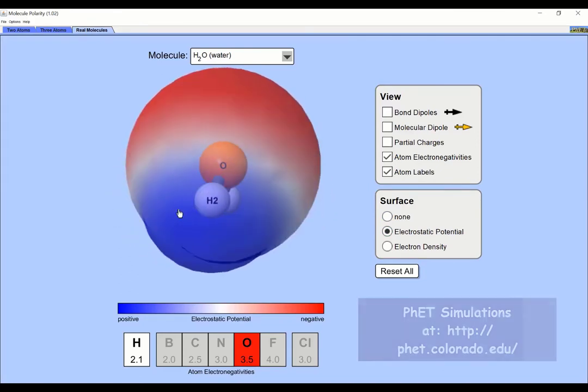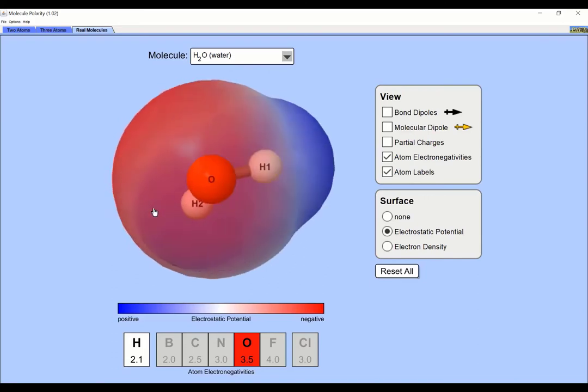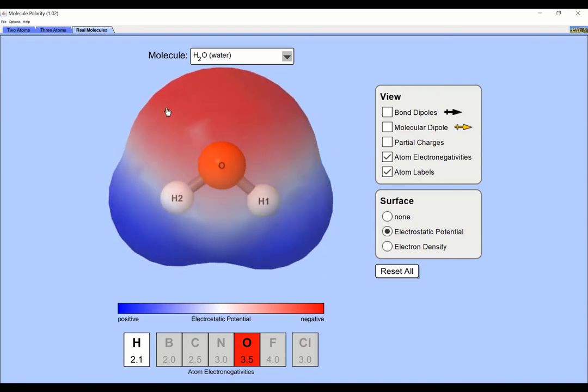Because the oxygen is more electronegative, the bonding electrons are spending more time around it than they are around the hydrogen atoms.